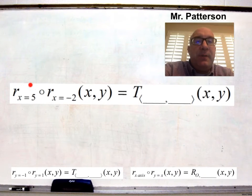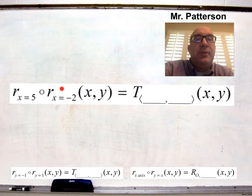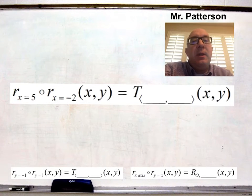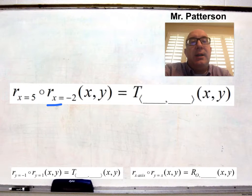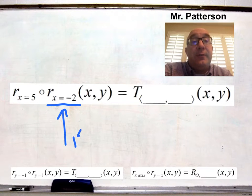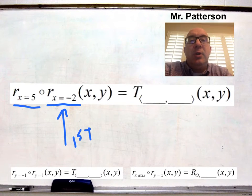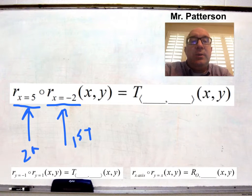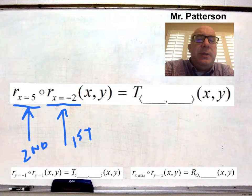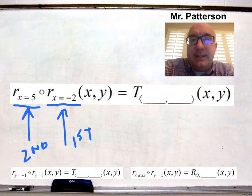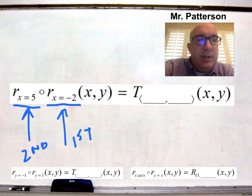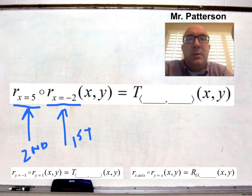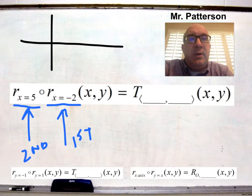All right, let's take a look. If you look right here, we're doing a double reflection. First, we're going to go over the x equals negative 2 line — we're going to do that first. And then we're going to go over, second, the x equals 5 line. The reason why students stop or even leave these ones blank is that there's just a lot of notation here. So let's just make sense of what's going on.